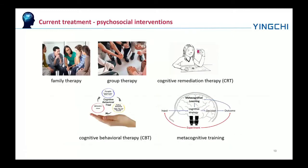A number of psychosocial interventions that include several types of psychotherapy may be useful in the treatment of schizophrenia, such as family therapy, group therapy, cognitive remediation therapy, cognitive behavioral therapy, and metacognitive training, skills training, and help with substance use and weight management — the latter often needed as a side effect of antipsychotics.